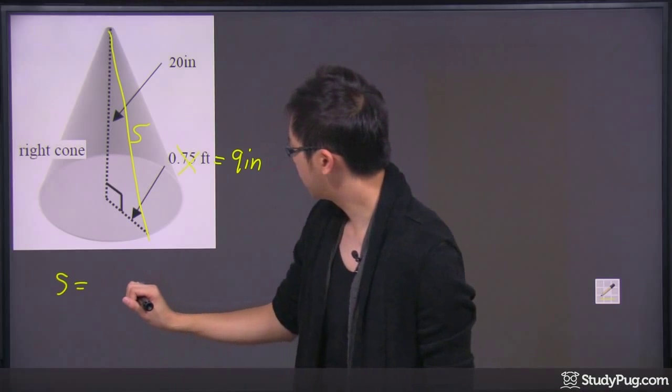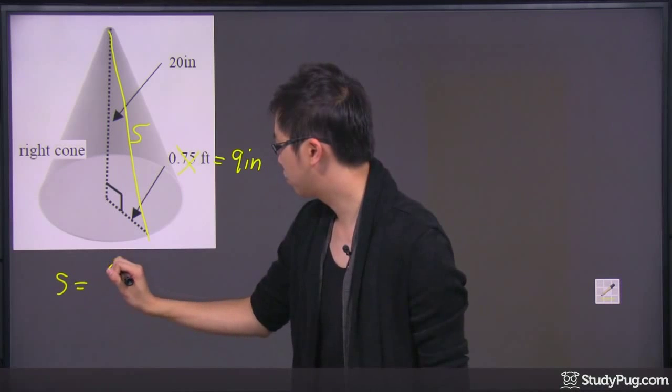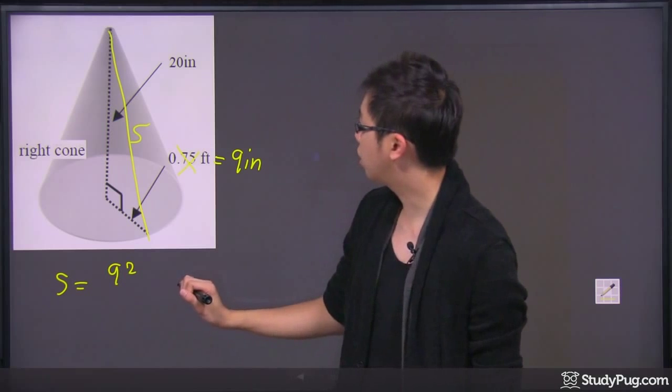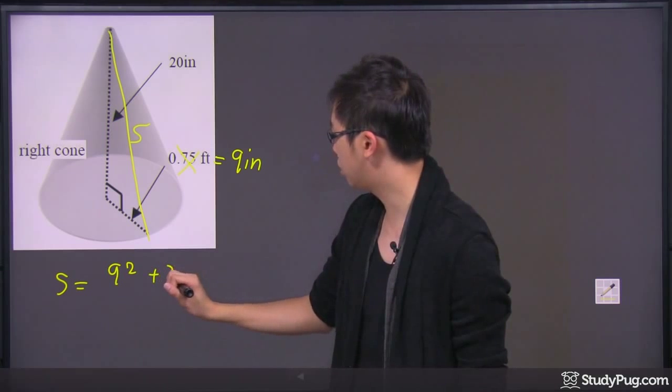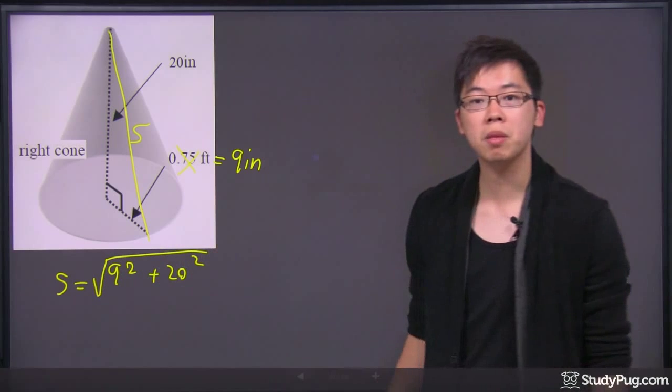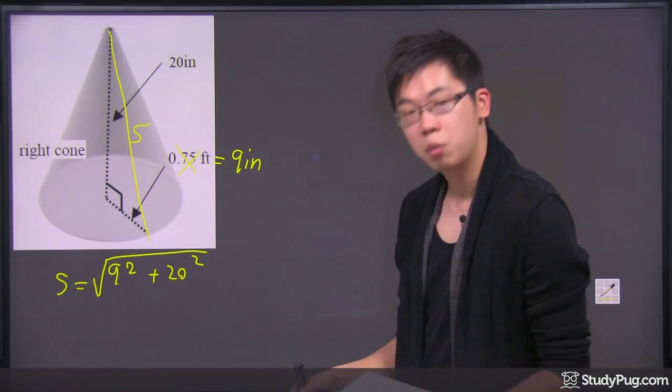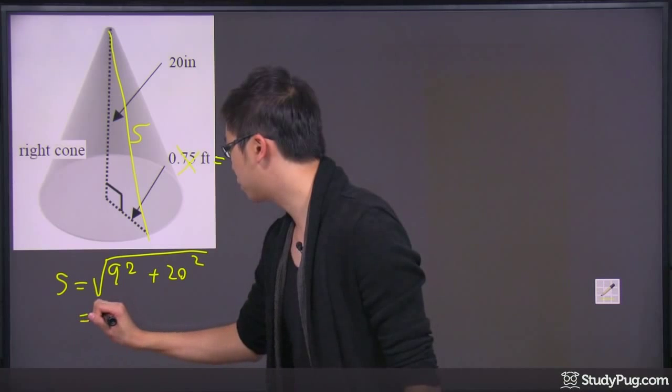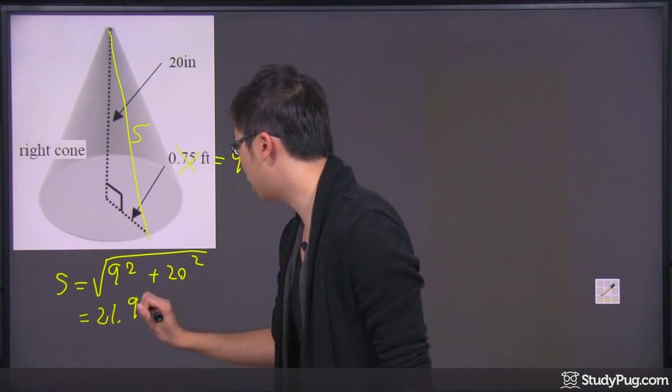We've got the 9 inch. We're going to square that. It's going to be added to the 20 inch. We're going to square that as well, and the square root. If you do the math correctly, we have 21.9. This is 21.9 inch.